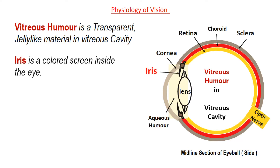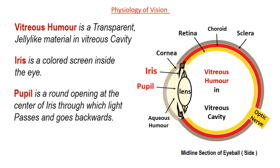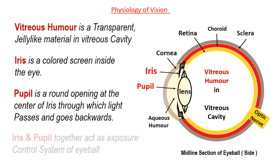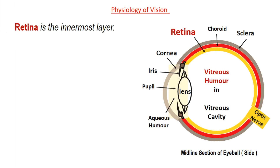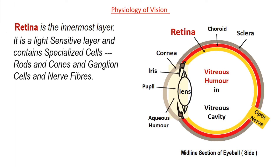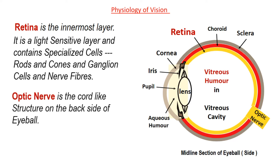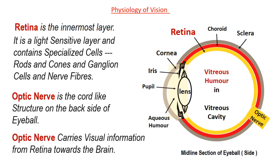Iris is a colored screen on the front portion of the eye. Pupil is a round opening at the center of the iris through which light passes and goes backwards. Iris and pupil together act as the exposure control system of the eyeball and allow only the required amount of light rays inside the eye. Retina is the innermost layer — a light sensitive layer that contains mainly nerve fibers and specialized cells such as rods, cones, and ganglion cells. This layer is engaged in the visual process. Optic nerve is the cord-like structure on the back side of the eyeball and carries visual information from the retina towards the back side of the eye.